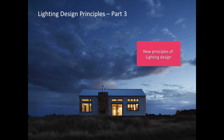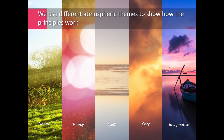The Principles of Creative Lighting Design. We have described the basic principles through different atmospheric themes, illustrated here by images: Natural, Happy, Calm, Cozy, and Imaginative. We will look at light for each of the three building blocks of lighting design and how they influence atmosphere.